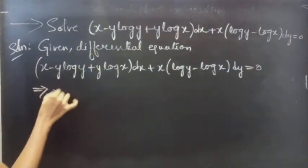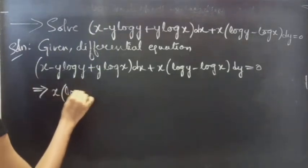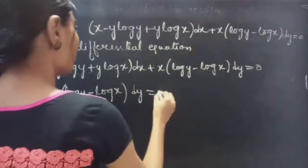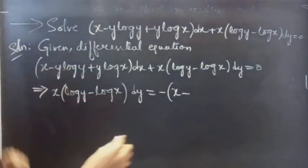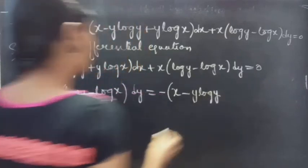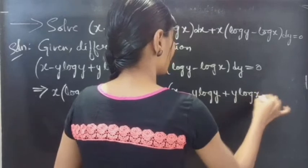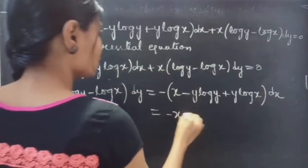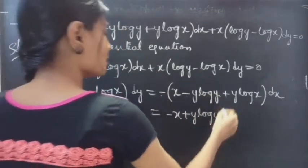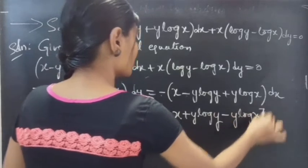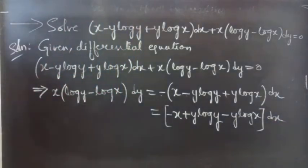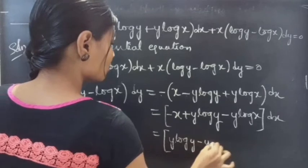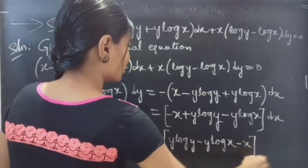Solution. We can write this as x times log y minus log x into dy equals to, taking the other term to the RHS, you will get minus of x minus y log y plus y log x into dx, which simplifies to y log y minus y log x minus x into dx.